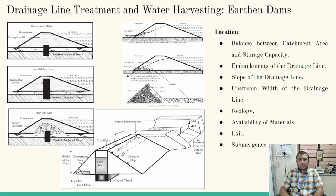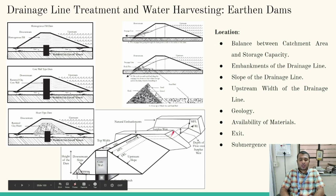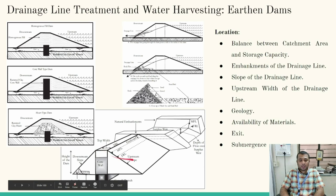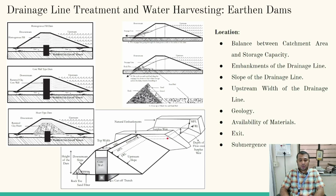Now let us look at criteria for site selection for earthen dams. Before that, let us understand the components of an earthen dam. There are three major hydraulic structures: first, the earthen dam embankment, made completely of soil material. Second, the surplus weir, which enables excess water to be disposed to the downstream side. Third, the sluice, which is the hydraulic structure constructed to extract stored water from the earthen dam.